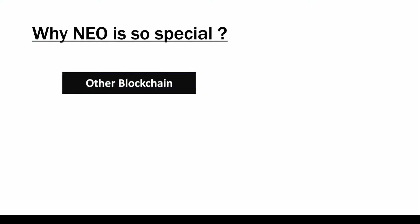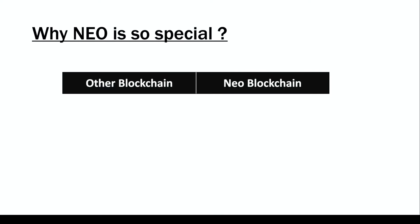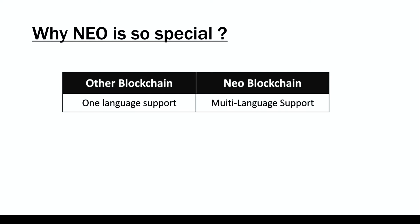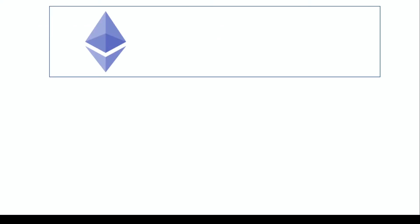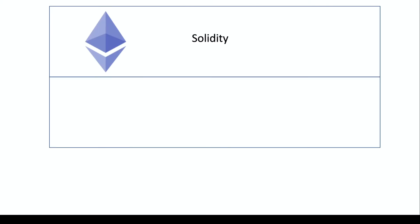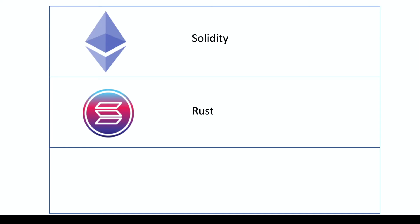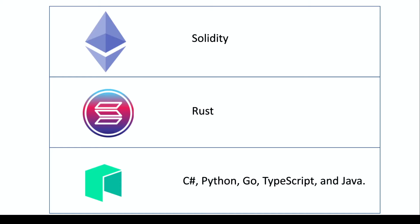Let's see the comparison between other blockchains and the NEO blockchain. Other blockchains support only one language, while NEO blockchain supports multiple languages. For example, Ethereum supports Solidity, Solana supports Rust — but in the case of NEO, we have multi-language support, and that's the best part of NEO blockchain.